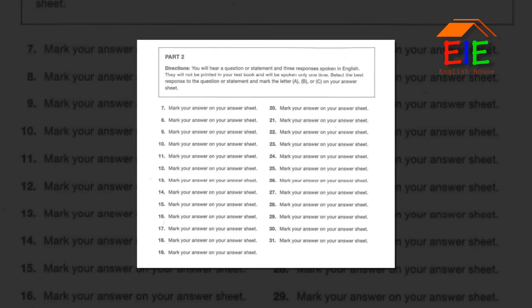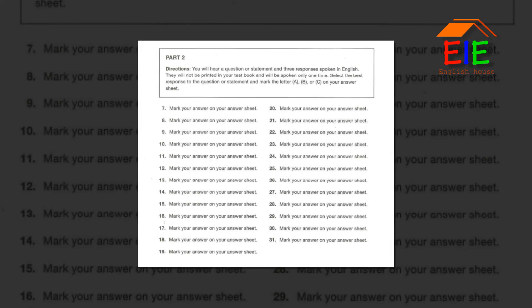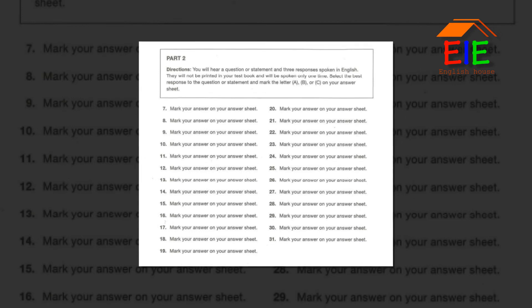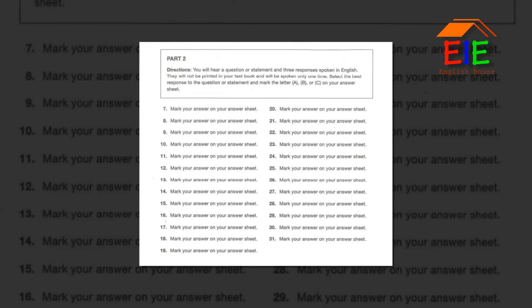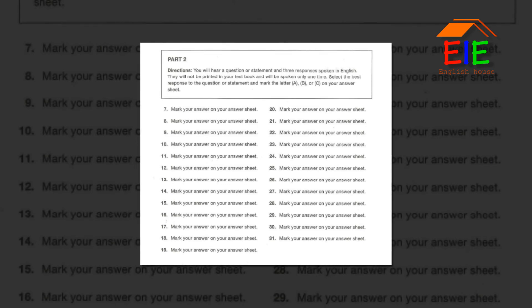Number 24. Weren't you planning to see a concert tonight? A. The tickets are sold out. B. I'll finish it right now. C. A very famous painter. Number 25. When will the presentation materials be ready? A. New company policies. B. I have two slides left to make. C. A seat by the window.